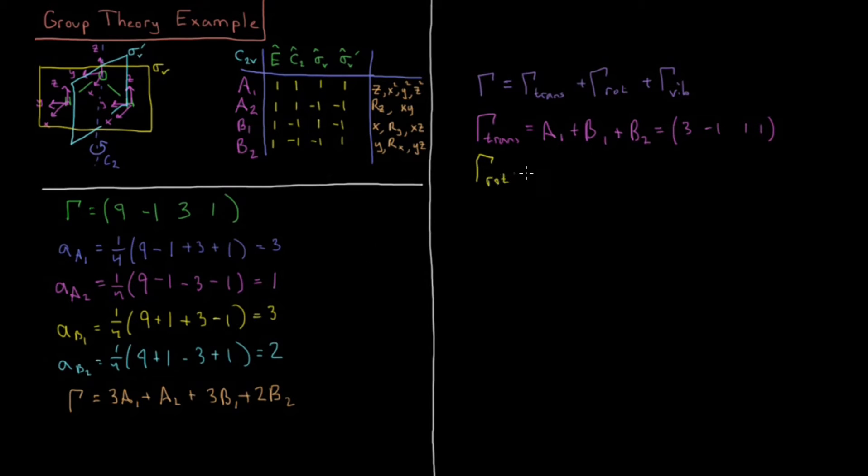And similarly, for rotations, we look where these RX, RY, and RZ are located in the table. So for the rotations, we're getting A2 is the Z rotation, rotating the molecule around Z. Rotating around Y is B1, plus rotating around X is B2. And the reducible representation of that, if I have it written down correctly, is 3, minus 1, minus 1, minus 1.